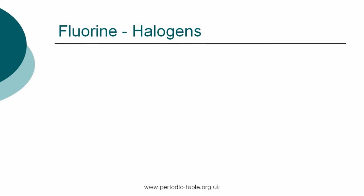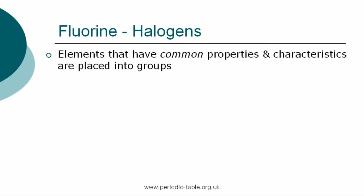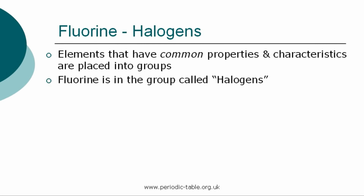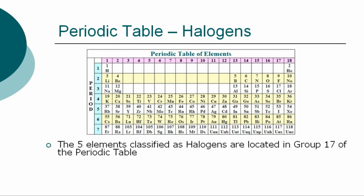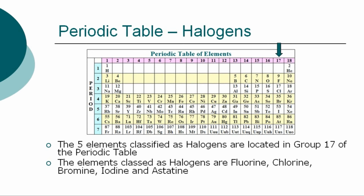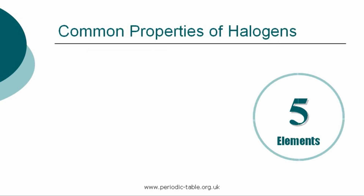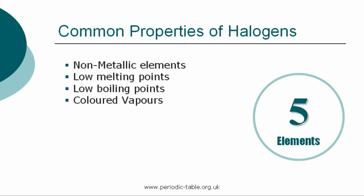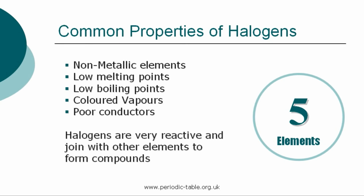Once the properties of an individual element have been identified, it is placed into a group of elements which have common properties and characteristics. Fluorine is in the group called the halogens. The five elements classified as halogens are located in group 17 of the periodic table: fluorine, chlorine, bromine, iodine, and astatine. Halogens are non-metallic elements with low melting and boiling points. They have colored vapors and are poor conductors of heat and electricity. They are very reactive, so they are likely to join with other elements on the left side of the periodic table to make compounds.